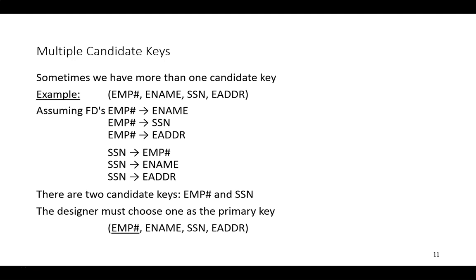Each employee also has a unique social security number, which again functionally determines all remaining attributes. So there are two candidate keys: employee number by itself and social security number by itself. The designer must choose one of these as the primary key. Given the sensitive nature of social security number, it makes more sense to use the employee number as the primary key in this example.